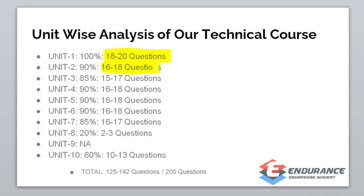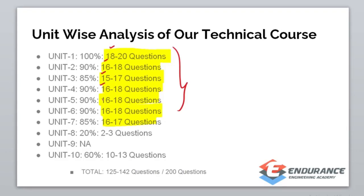Unit 2 — 16 to 18 questions. Unit 3 — 15 to 17 questions. Unit 4 — 16 to 18 questions. Units 5, 6, 7 — 16 to 18, 16 to 17 questions respectively. So looking at the overall course, you can guarantee answering a minimum number of questions. This is the minimum number of questions you can attend, and the maximum number of questions you can attend.